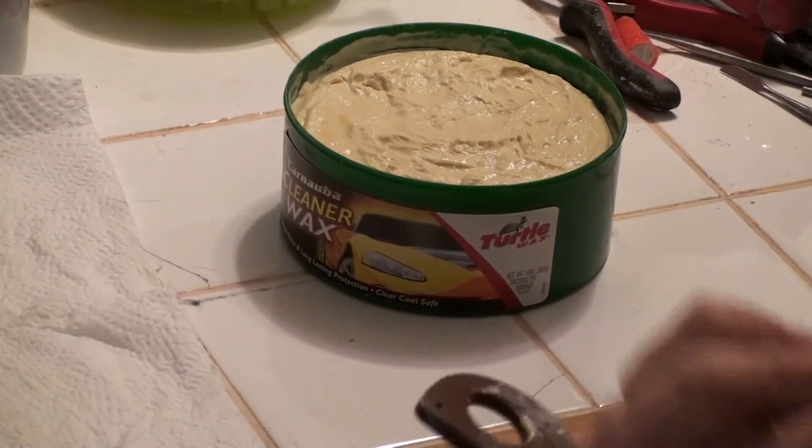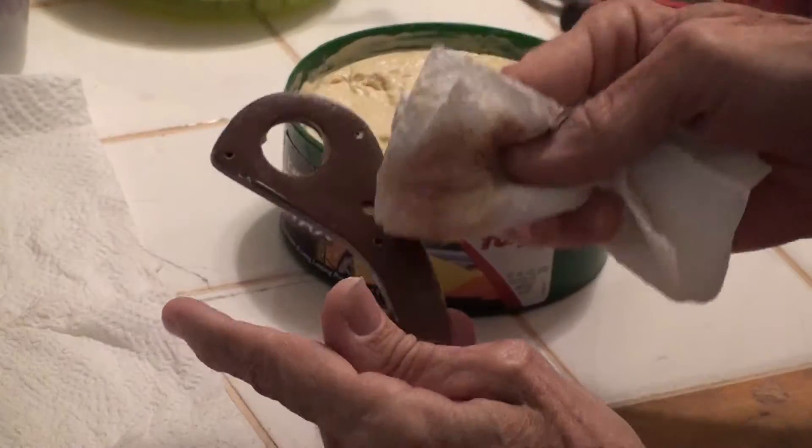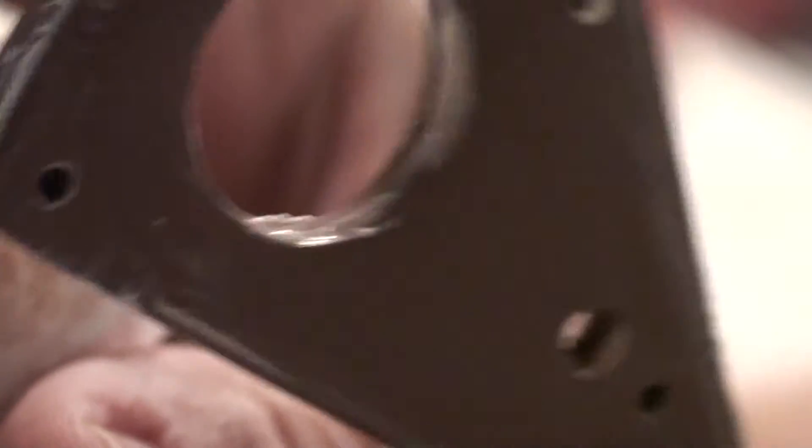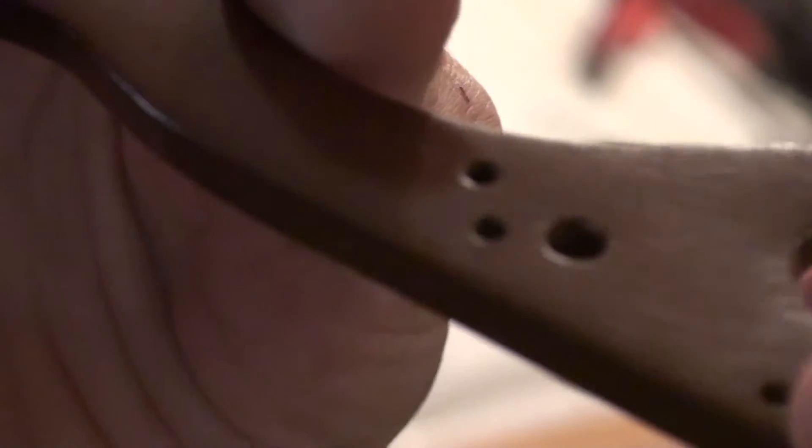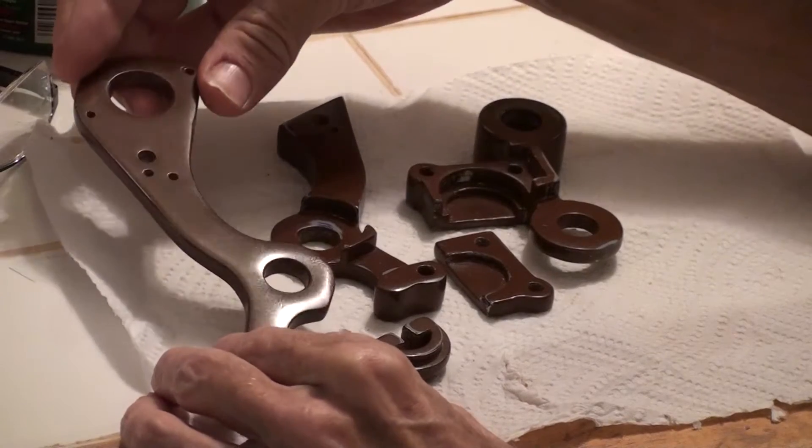Once again, I think that I've sanded enough to get the part smooth. And the paste wax is the final layer of abrasive. You can actually see it removing some of the red paint here. After the paste wax, the parts are all nice and shiny and smooth.